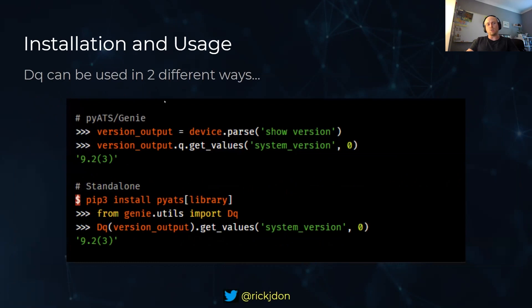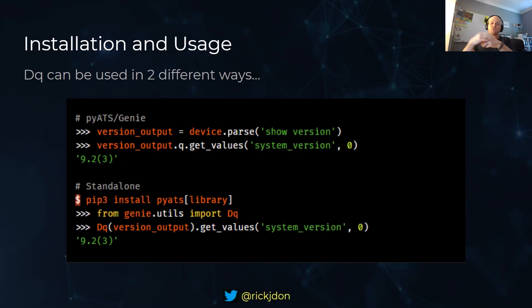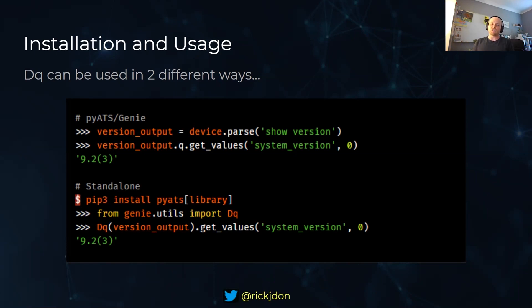So installation and usage. With DQ, you can use it in two different ways. You can use it via the PyATS Genie framework, where DQ presents itself as a method on your PyATS object - you just use .q. So you do device.parse, get show version back within PyATS, and within that object you've got the Q object available, and you can start using those methods to parse the data. You can also use it on a standalone basis by importing the library directly into your Python script using the Genie utils.